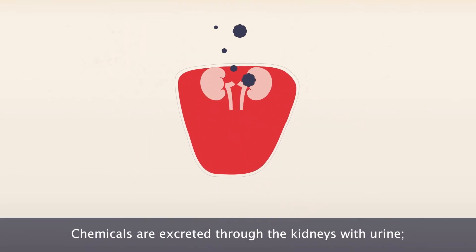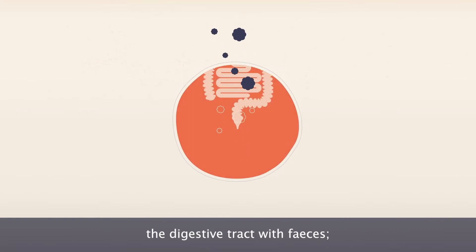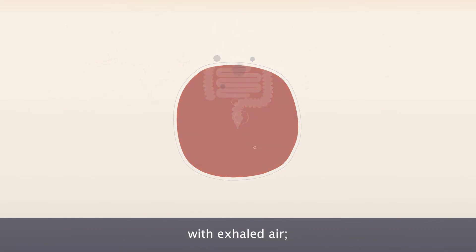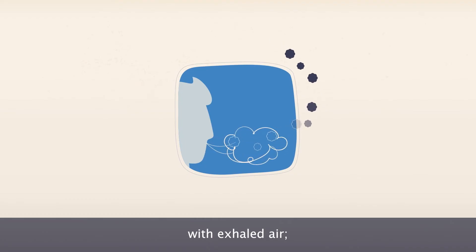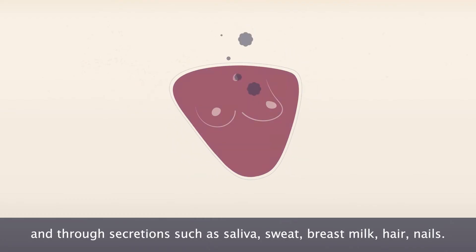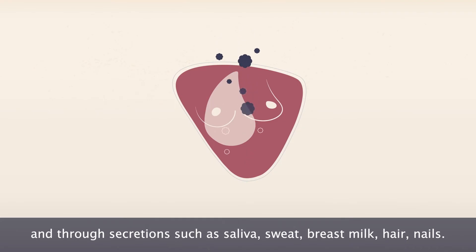Chemicals are excreted through the kidneys with urine, the digestive tract with feces, with exhaled air, and through secretions such as saliva, sweat, breast milk, hair, and nails.